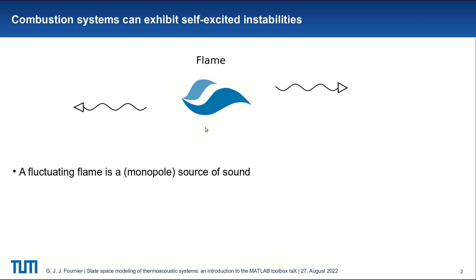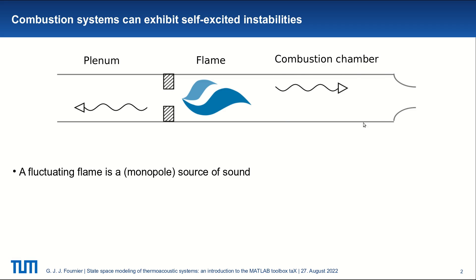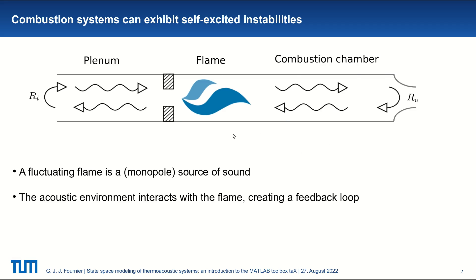Now to extract some energy from that flame, it is placed in a confined environment like a combustion chamber. And this environment will interact with the flame, creating a feedback loop. So we have the waves that are partially transmitted and reflected at the boundaries and the reflected waves come back to the flame, thus creating a feedback loop.